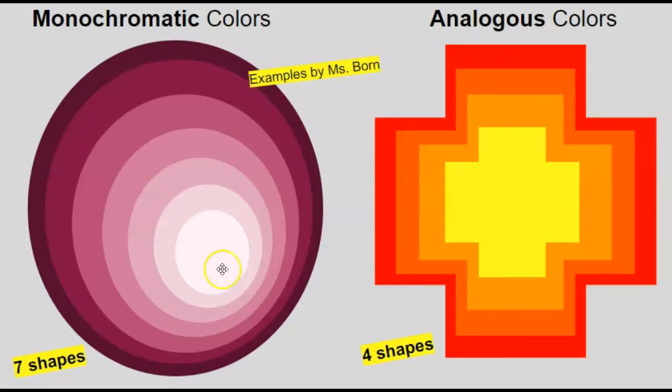The monochromatic picture will have seven shapes. Your analogous picture will have four shapes.